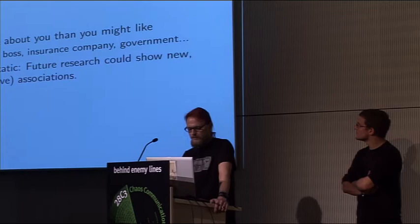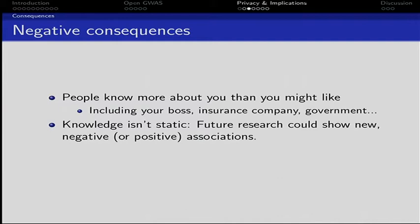Another thing is this knowledge isn't static. There are one million markers tested, but up to now we only have associations for about 30,000 of those markers — nearly a million left which we don't know what they are doing. Even if you're quite informed about what your genetic information says right now, you have no guarantee that two days from now there won't be a publication linking SNP 666 to some deadly disease you will develop in five years, and everybody knows because you already published your data.